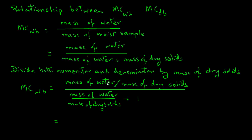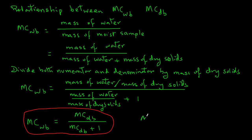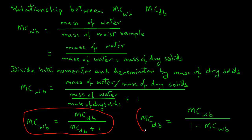So, moisture content wet basis equals moisture content dry basis divided by moisture content dry basis plus one. Similarly, you can express moisture content dry basis as moisture content wet basis divided by one minus moisture content wet basis.